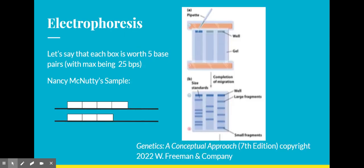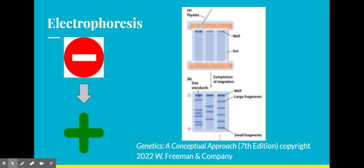We're going to take the DNA and load it into the top of the well, as shown in the gel. For example, here we can see Nancy McNutty's sample. She has five boxes, and let's say they're worth five base pairs, perhaps ATT. So for one copy of her allele, she has 20 copies of ATT, whereas on her bottom copy she only has 15. This is important because the positive charge is going to draw the negative DNA out into the gel, where the shorter segments of DNA are going to move farther due to less force being required to move them.